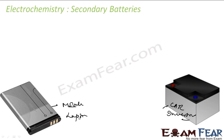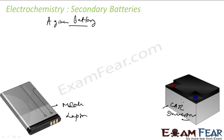Secondary batteries can be recharged by passing current in the opposite direction. A good secondary cell can undergo a large number of discharge and recharge cycles. Every battery has a fixed number of charge and discharge cycles, which is why even a rechargeable battery stops working after a couple of years.